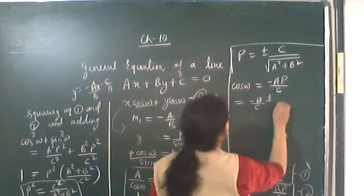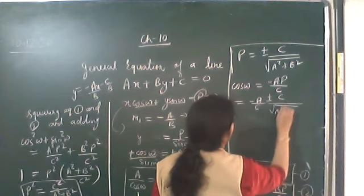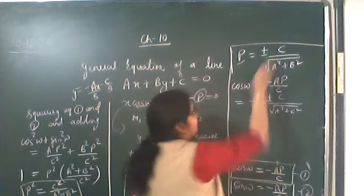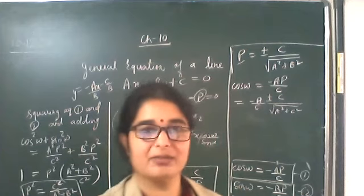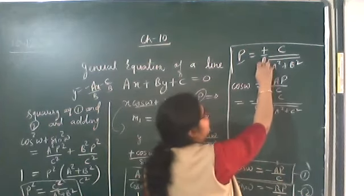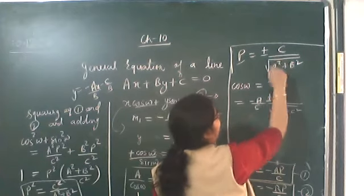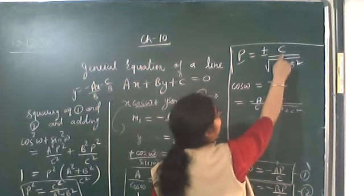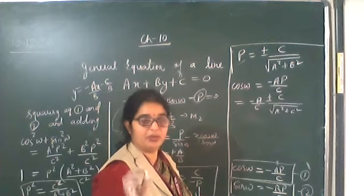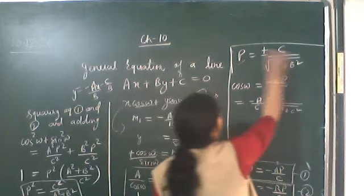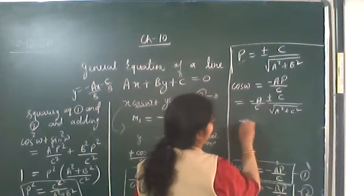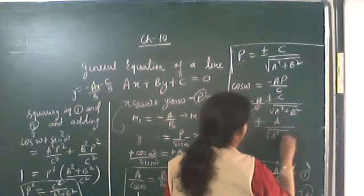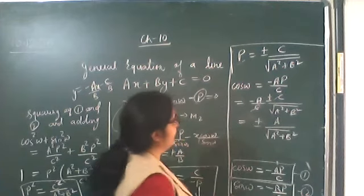We get plus or minus c upon the square root of (a² + b²). Since p is the perpendicular distance, the value of p (or t) is always positive. So if c is negative, we take the positive value, and if c is positive, we adjust the sign accordingly.